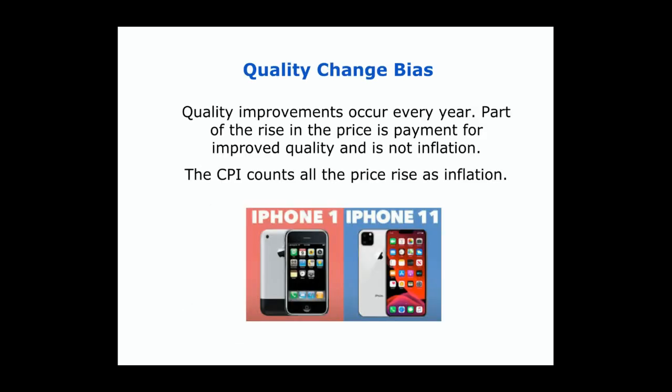In a similar way, newer versions of existing products — like the latest iPhone or Android phones — are going to be much improved in quality compared to the original versions that were in the market basket. Products with much greater quality are also going to have higher prices. So the CPI counts all of the higher price as inflation, when really some of it should be attributed to the fact that the phone has much greater features and quality than the original one in the market basket.